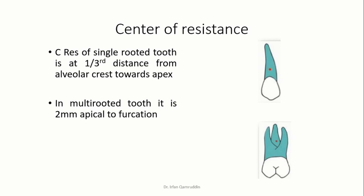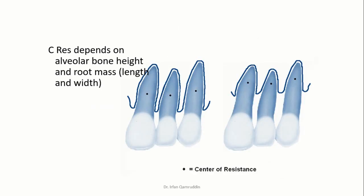Center of resistance of a single-rooted tooth is approximately one-third distance from the alveolar crest towards the apex, while in a multi-rooted tooth it is approximately two millimeters apical to the furcation area. Center of resistance depends on two factors: alveolar bone height and root mass. Root mass means not only the length of the root, but also the buccolingual and mesiodistal width, because center of resistance is the center of mass of the constrained portion.